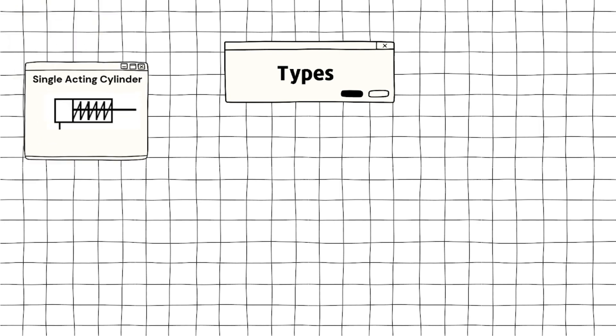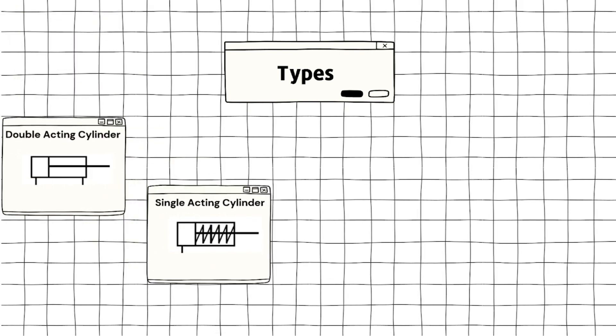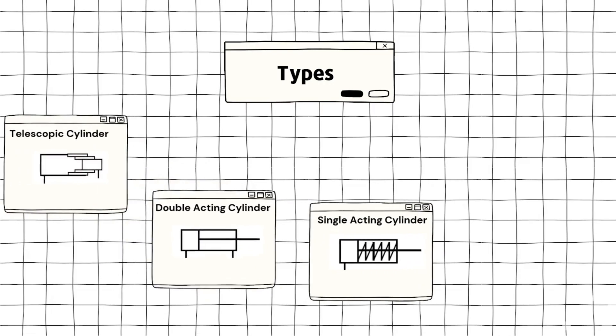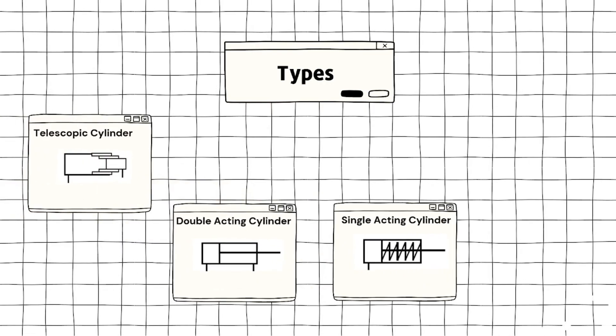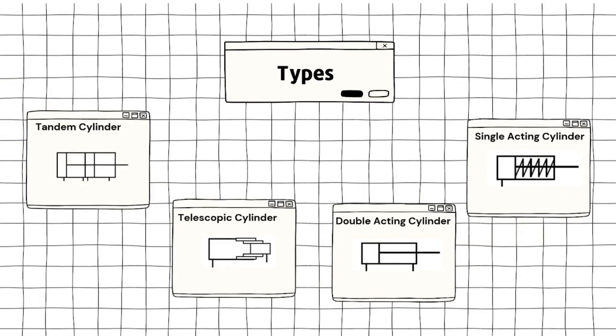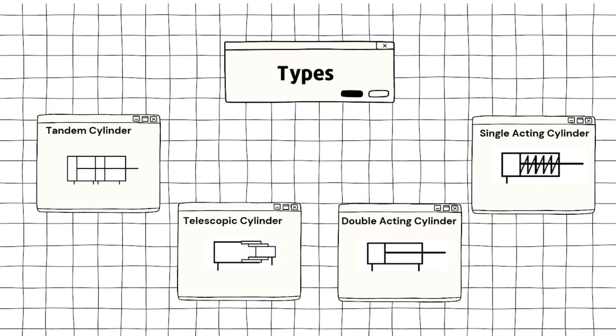There are four types of hydraulic cylinders: one, single acting cylinder; two, double acting cylinder; three, telescopic cylinder; and lastly, tandem cylinder.